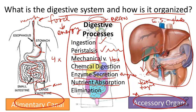Nutrient absorption is basically the movement of food molecules from the digestive tract into the blood. And finally, elimination or defecation is the process of eliminating waste from the system. In other videos, we'll break down the major structures and organs of the digestive system to determine their individual function and importance in the grand scheme.